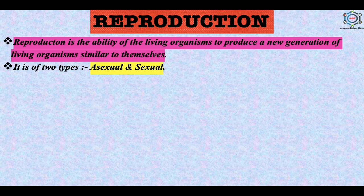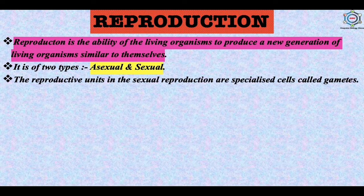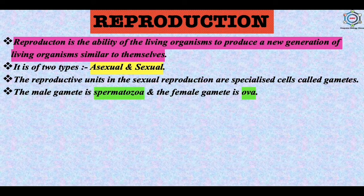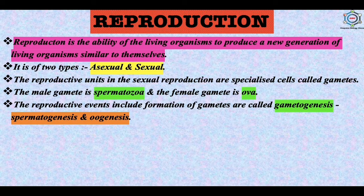Reproduction is of two types: first is asexual and the second is sexual. In case of asexual reproduction, there is no involvement of two parents. But in case of sexual reproduction, there is involvement of two parents — one is male and the other is female. The reproductive units in sexual reproduction are specialized cells known as gametes. In case of male, the gamete is formed by spermatogenesis, and in case of female, the gamete is known as ova. The process of formation of gametes is known as gametogenesis — spermatogenesis in male and oogenesis in female.